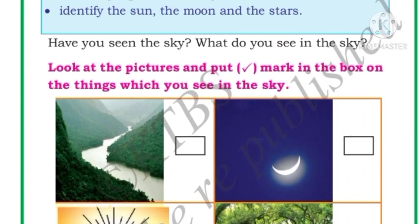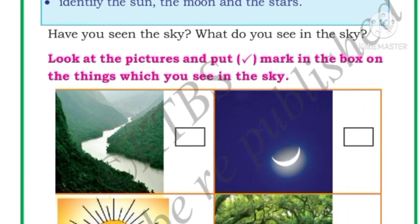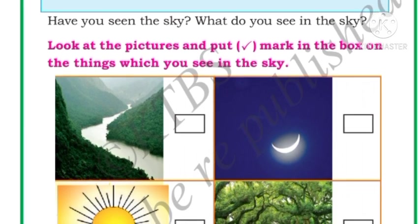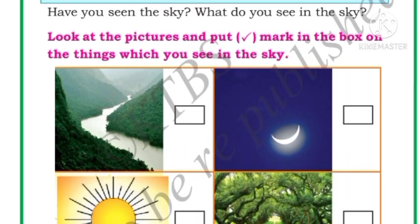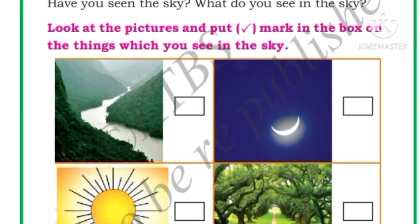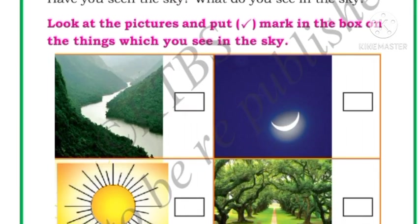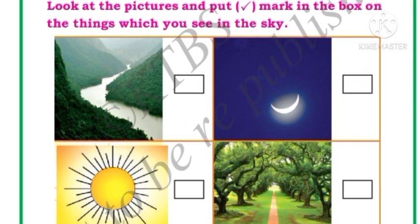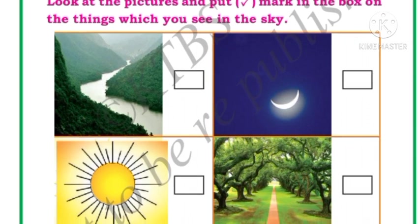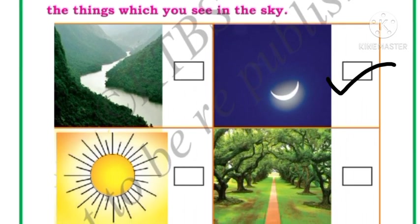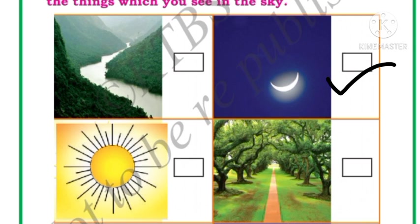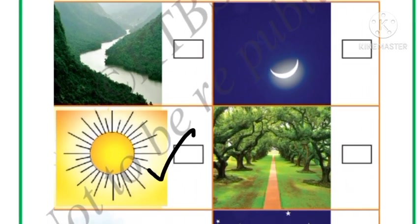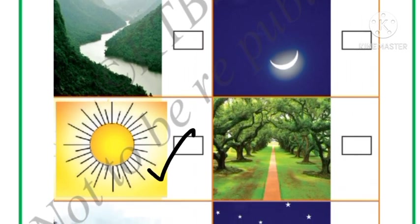Look at the pictures and put a right mark in the box on the things which you see in the sky. First, river water — do you see water in the sky? No, so we will not put a right mark. Moon — do you see the moon in the sky? Yes, we will put a right mark. Then the sun — do you see the sun? Yes, we will put a right mark.